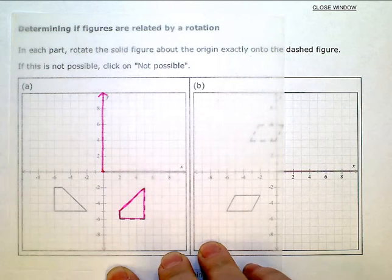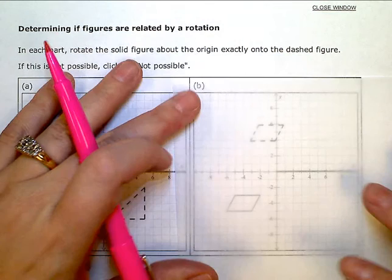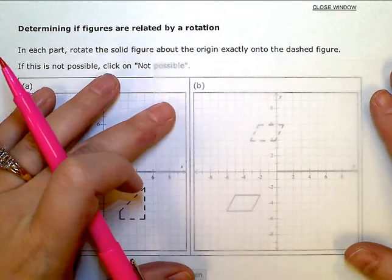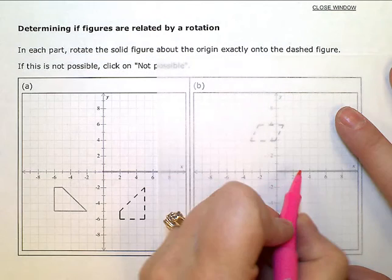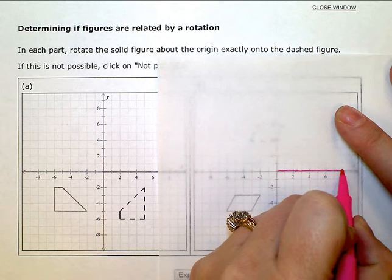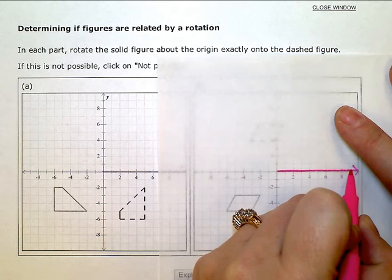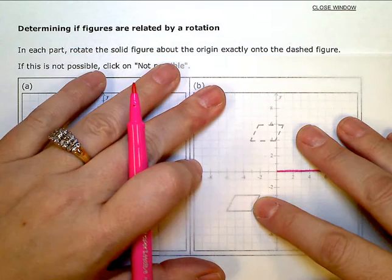The next one - let's do the same thing. Here's my tracing paper, and here's my darkened axis that I'm tracing here. Here's my solid figure.